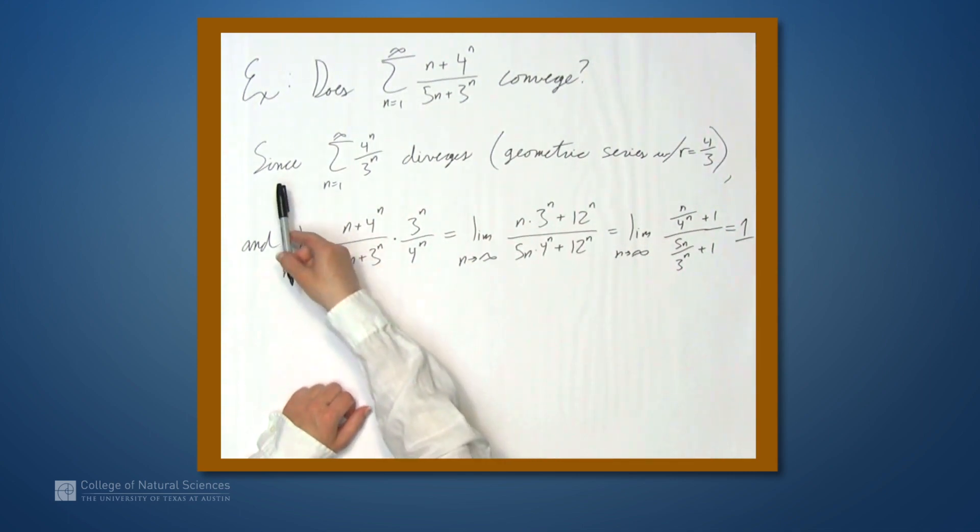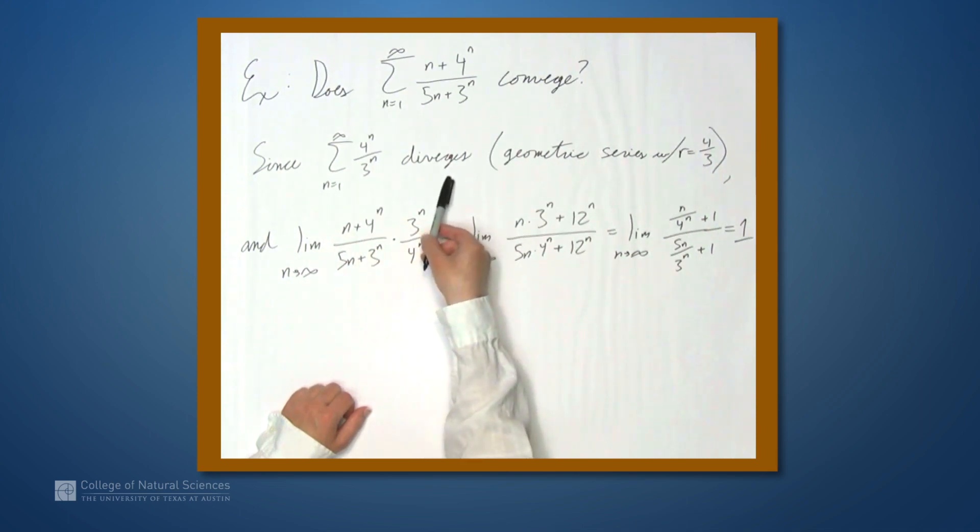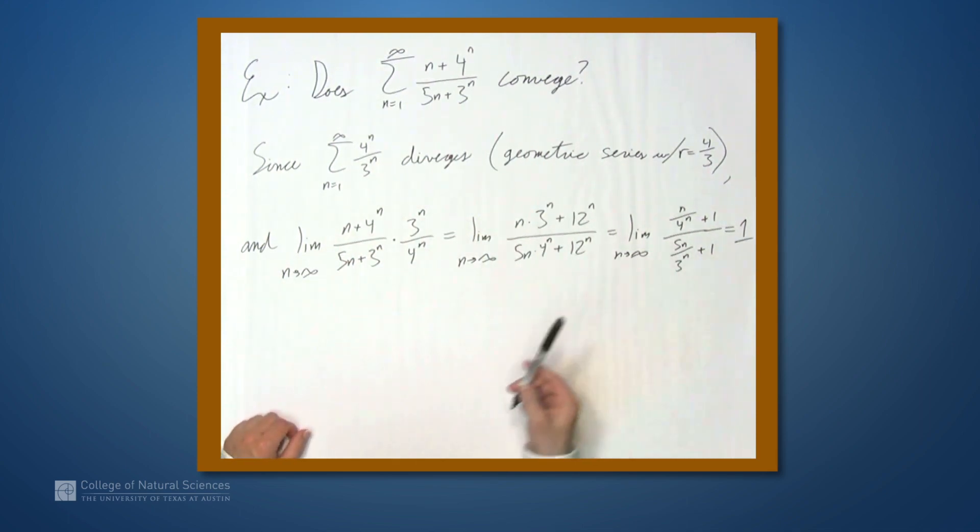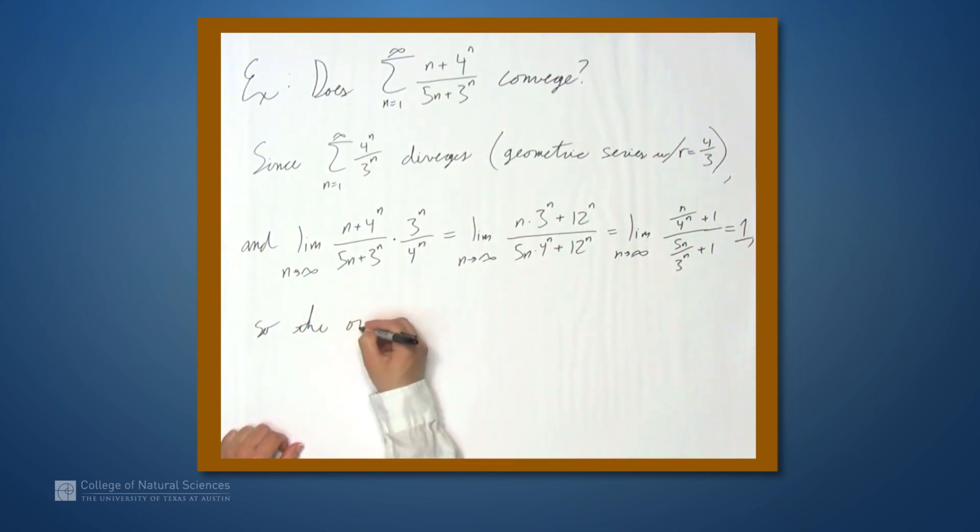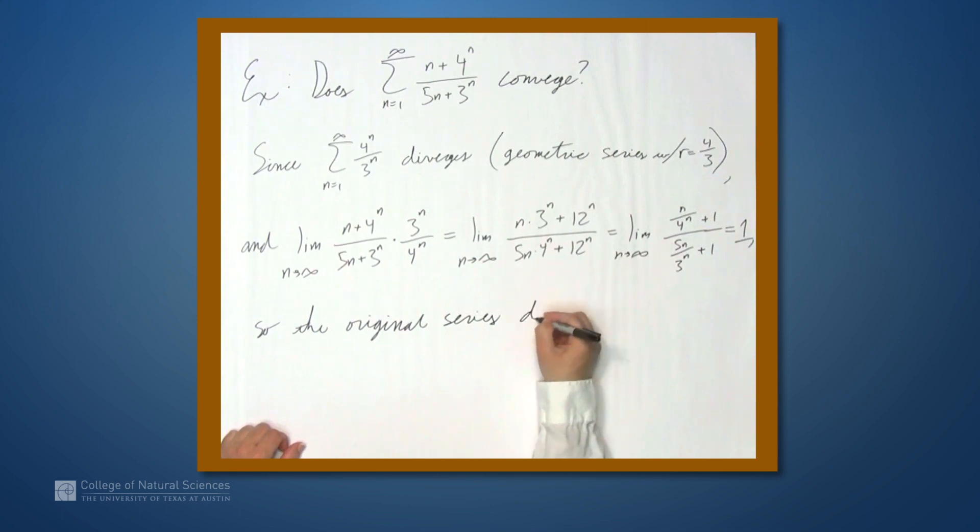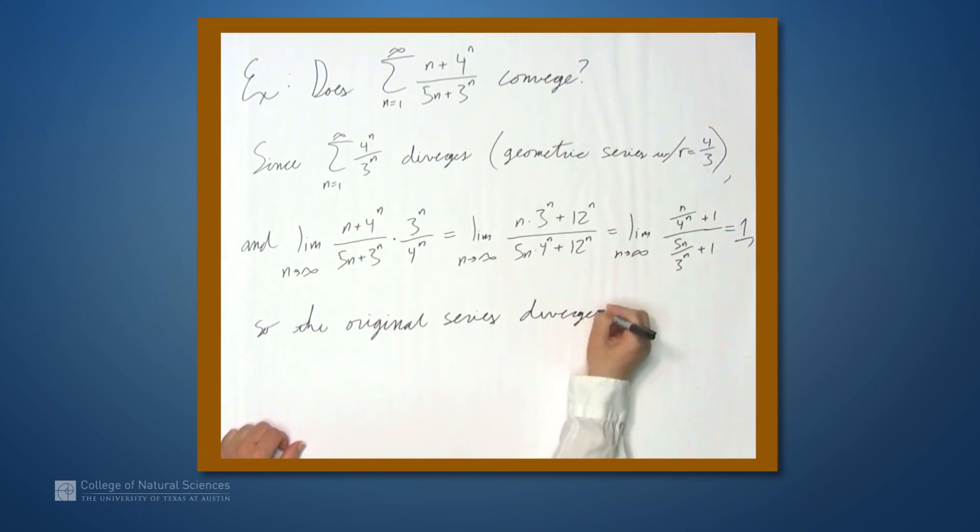Since this series diverges and this limit equals 1, we can conclude that the original series diverges by the limit comparison test.